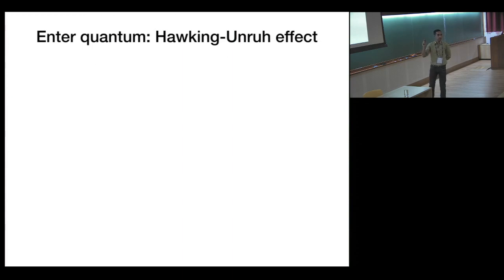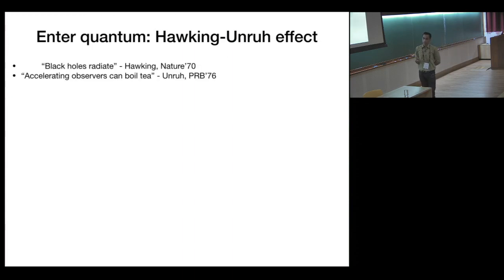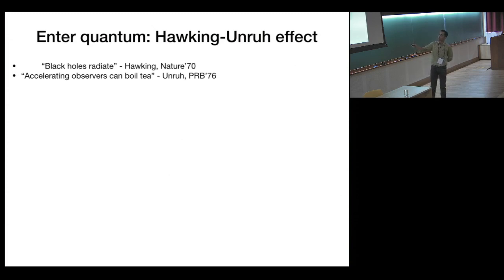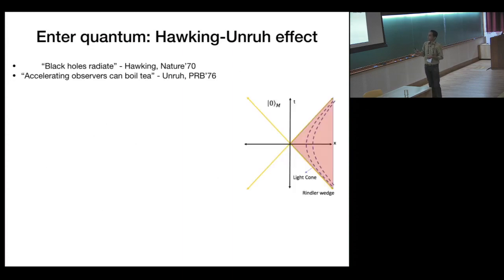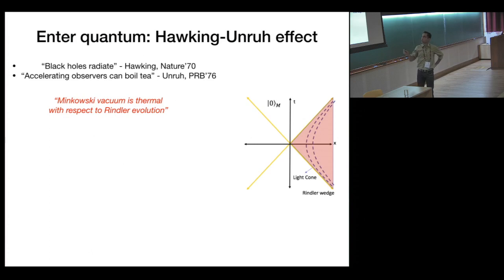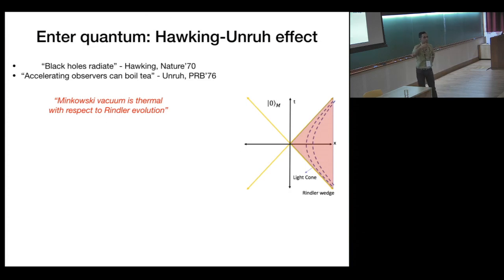So far everything has been completely classical. Now we put in quantum mechanics. When Hawking tried to calculate quantum fluctuations near the black hole horizon, he found that black holes radiate — his paper was titled 'Black Hole Explosions.' Unruh found that accelerating observers perceive a thermal bath, which is a surprising thing. The statement I would like to use is: the Minkowski vacuum is thermal with respect to Rindler evolution. This is what we're going to try to distill and see if it can happen in quantum Hall systems.